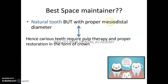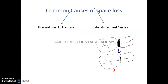The best space maintainer is your natural tooth with proper mesiodistal diameter. Whenever a carious tooth comes to you, it requires proper pulp therapy and restoration in the form of a crown. By giving a crown, we establish the proper mesiodistal width.